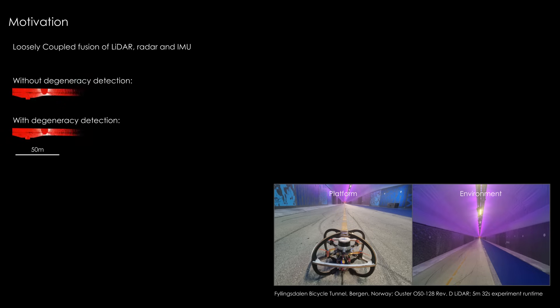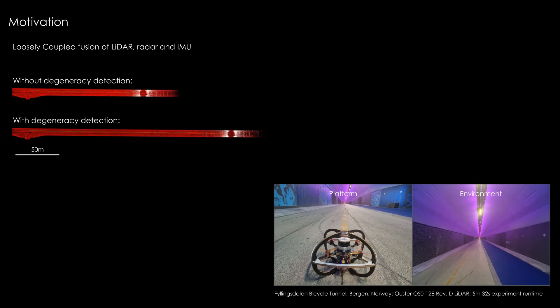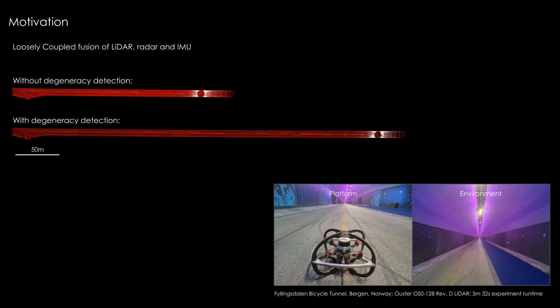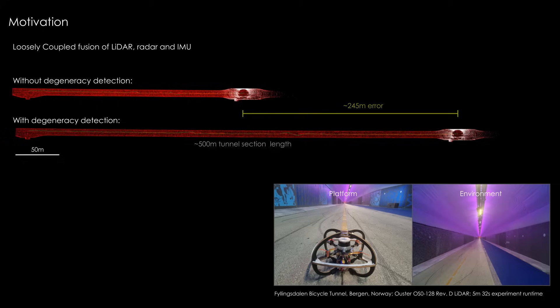This experiment demonstrates the detrimental effects of degeneracies on LiDAR-based state estimation. The geometry is uninformative in the longitudinal direction of the tunnel. Spurious information from noise masks the degeneracy, and the translation is grossly underestimated.